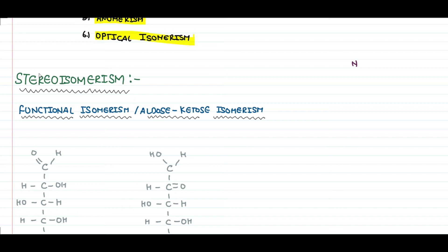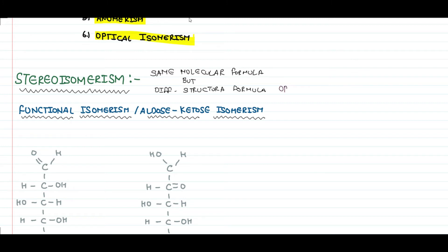Before moving further, we shall introduce one more term: stereoisomerism. Stereoisomerism refers to compounds having the same molecular formula but different structural formula in which the orientation of surrounding atoms is different in space — that is, they have different spatial orientation.